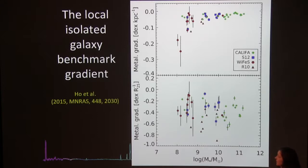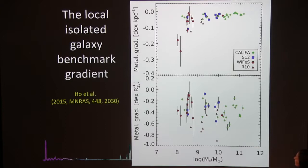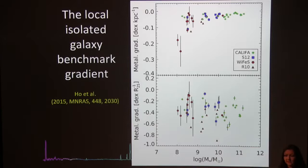First, we measured an isolated galaxy benchmark gradient — if we're comparing other things to isolated galaxies, we need to know what is a typical gradient. Zero is a flat gradient, negative is a steep gradient. We're using several integral field samples as a function of stellar mass. If you plot metallicity as a function of kiloparsec you see a change, but that's not real because galaxies have different sizes. If you normalize by the 25th isophotal radius, all galaxies across four orders of magnitude in stellar mass have roughly the same metallicity gradient — telling us they have very similar formation scenarios.